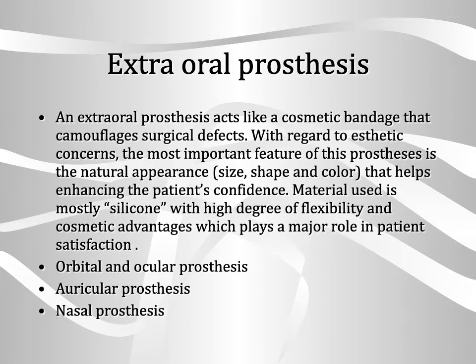An extraoral prosthesis acts like a cosmetic bandage that camouflages surgical defects. The most important feature is natural appearance in terms of size, shape, and color, which helps enhance the patient's confidence. The material used is mostly silicone, with a high degree of flexibility and cosmetic advantages. The types of extraoral prostheses are orbital or ocular prosthesis, auricular prosthesis, and nasal prosthesis.